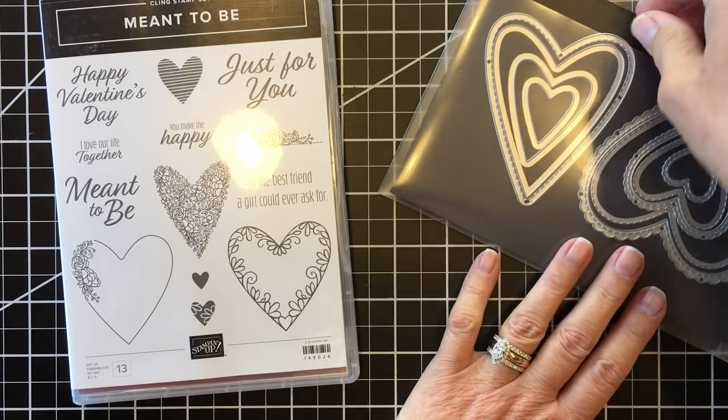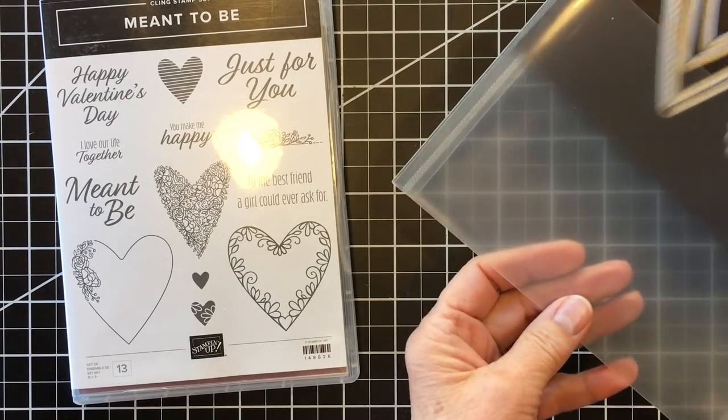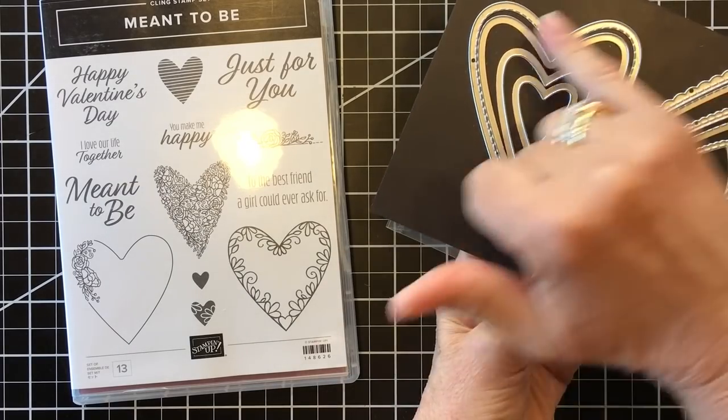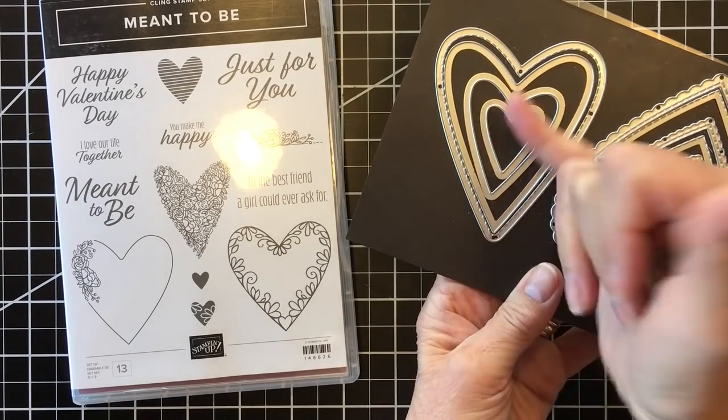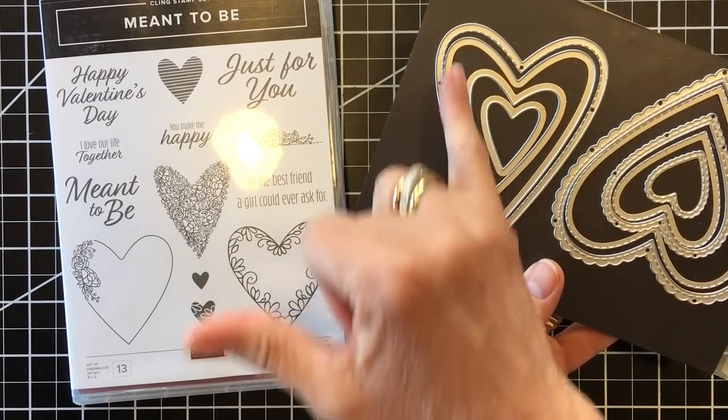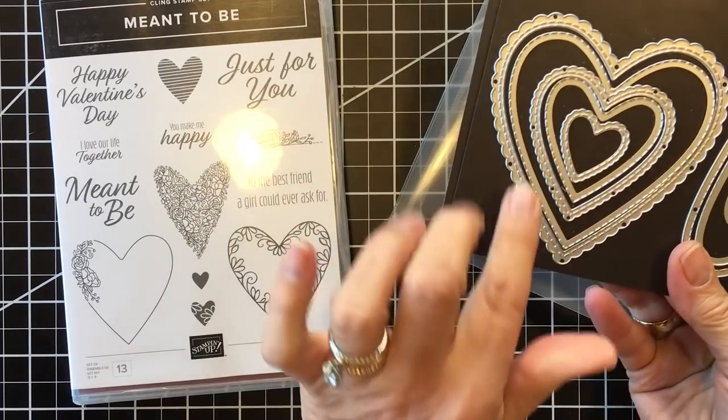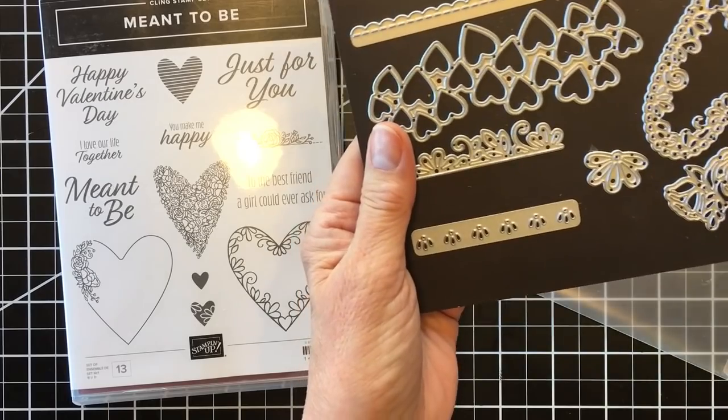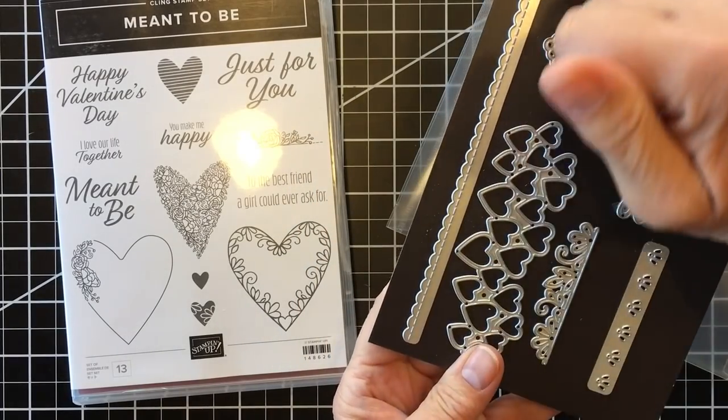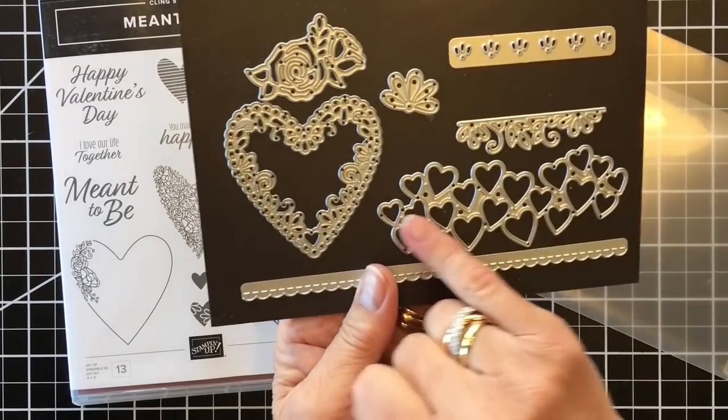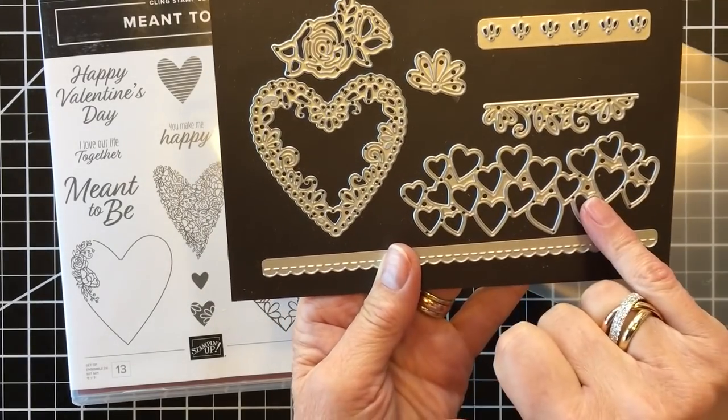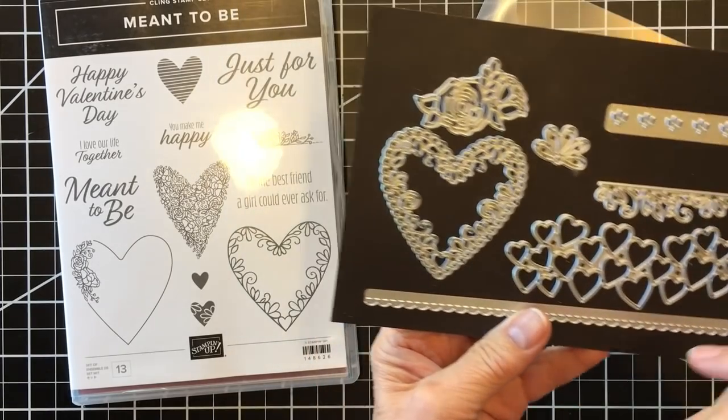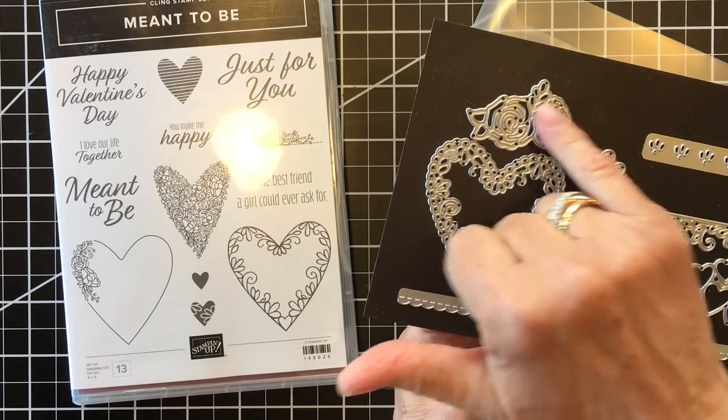The only way it could possibly be better is to have coordinating dies and it does deliver in a big way. These are the Be Mine Framelits Dies. I love that this more modern version nests and you can work with this little longer narrower die. And then this is more traditional with some of the scalloped edge and lots of cute little stitching. It has a great border with scallops and stitching. This crops out tons of little hearts as well as an open space of all those little hearts.